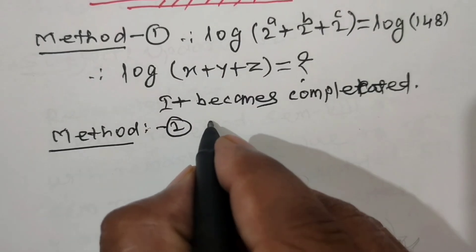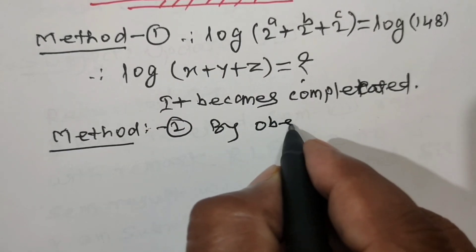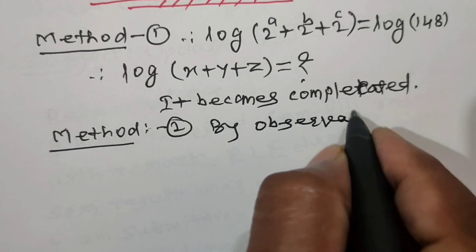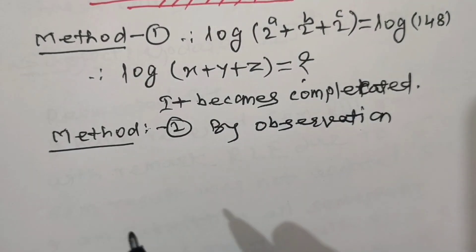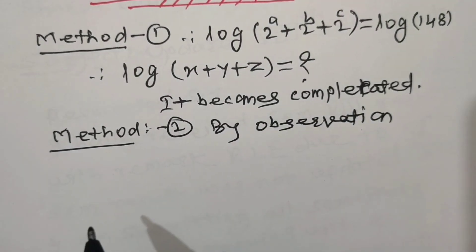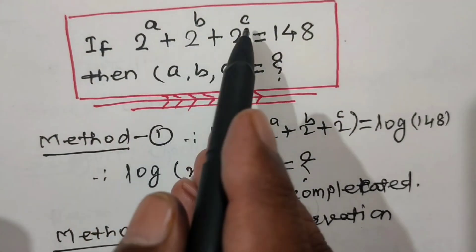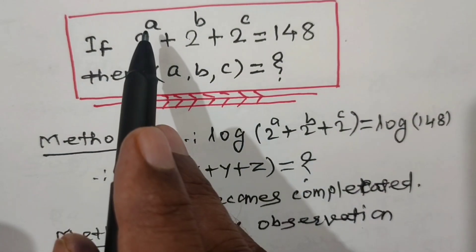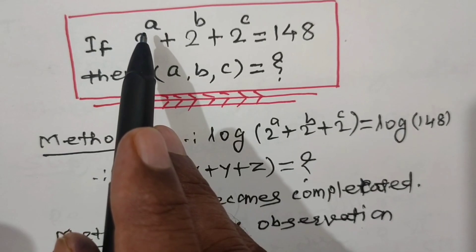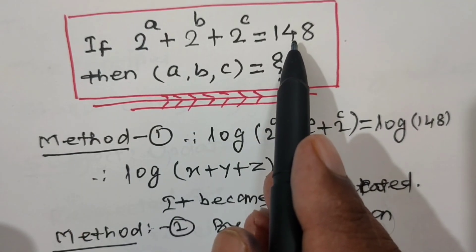Method 2: By observation. It is easy to solve this sum by observation method. We have to find out a value of a such that 2 to the power a is less than or equal to 148.